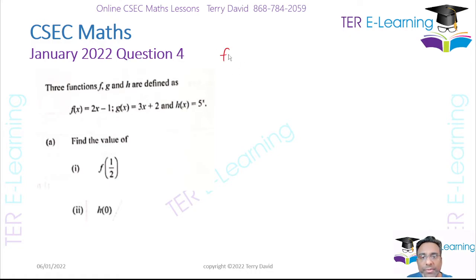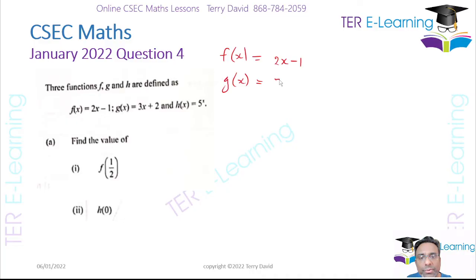The first one we have is f(x) = 2x − 1. The next one is g(x) = 3x + 2, and h(x) = 5 to the power x. Those are our three functions.